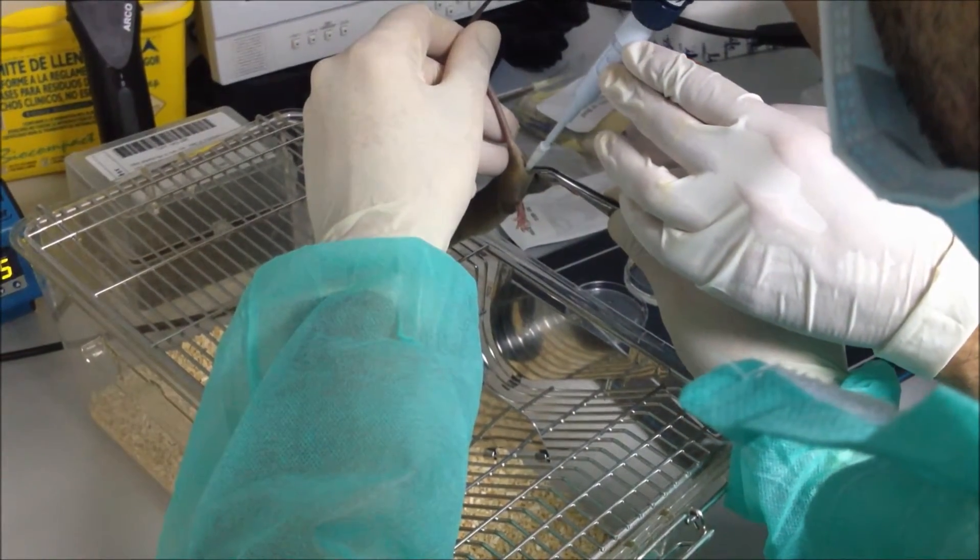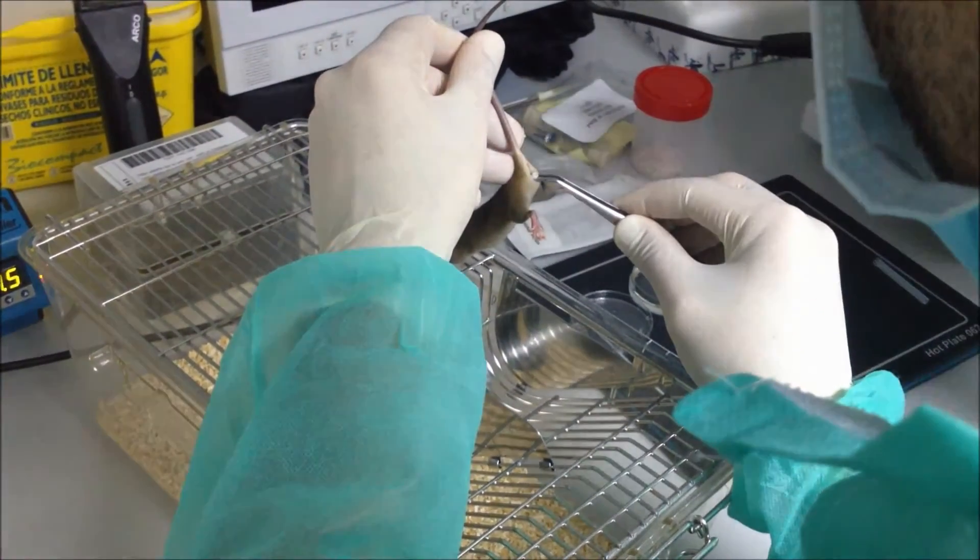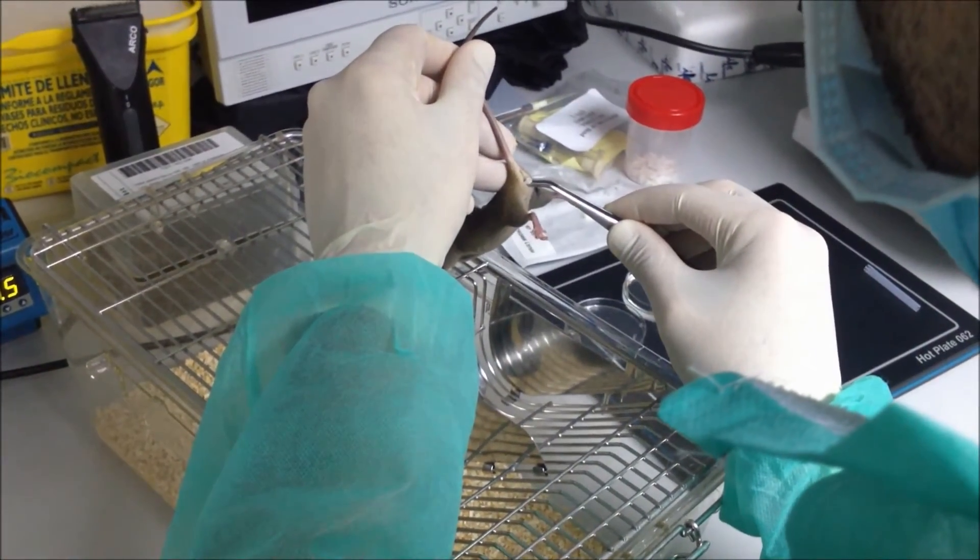Finally, the mice are returned to their cage and the pregnancy is allowed to progress. Optionally, if you want to assess 7.5 day developing embryos, you should sacrifice the mice on Thursday.